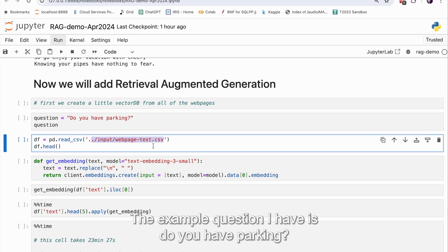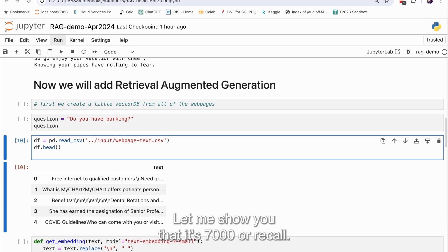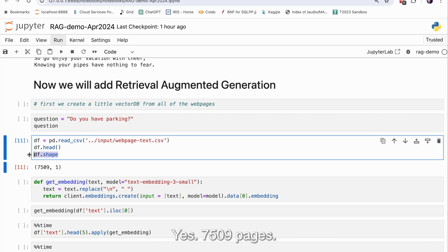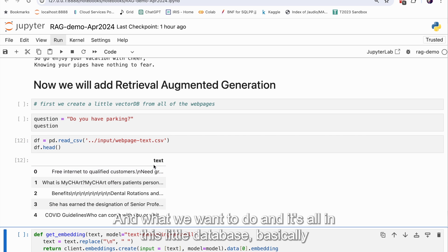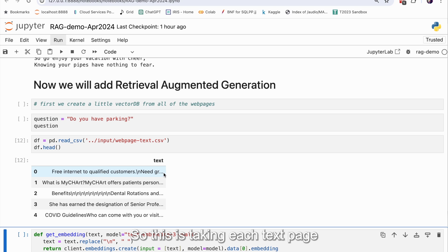And we want to answer patient questions. The example question I have is, do you have parking? So you have all these 7,000 pages. Let me show you that it's 7,000. Yes, 7,509 pages. And what we want to do, and it's all in this little database, basically, a CSV file. We want to add a second column with the embeddings. So this is taking each text page and creating a vector embedding.